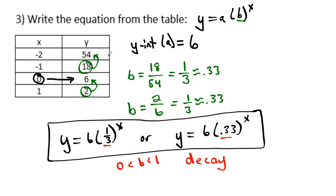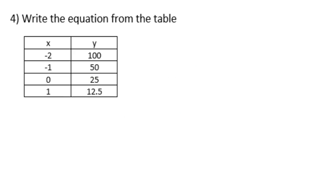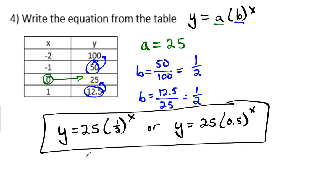We can see these values are going downhill, which means they are decaying. Number 4 is yours to do — go ahead and try it on your own, pause the video. The answer for number 4 is Y equals 25 times (1/2) to the X power, or Y equals 25 times 0.5 to the X power. 1/2 and 0.5 are the same — one is a fraction, one is a decimal.